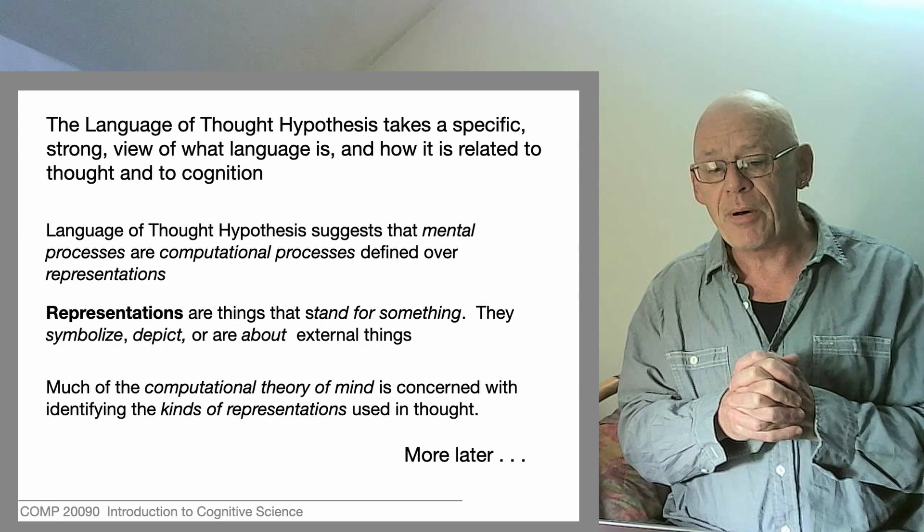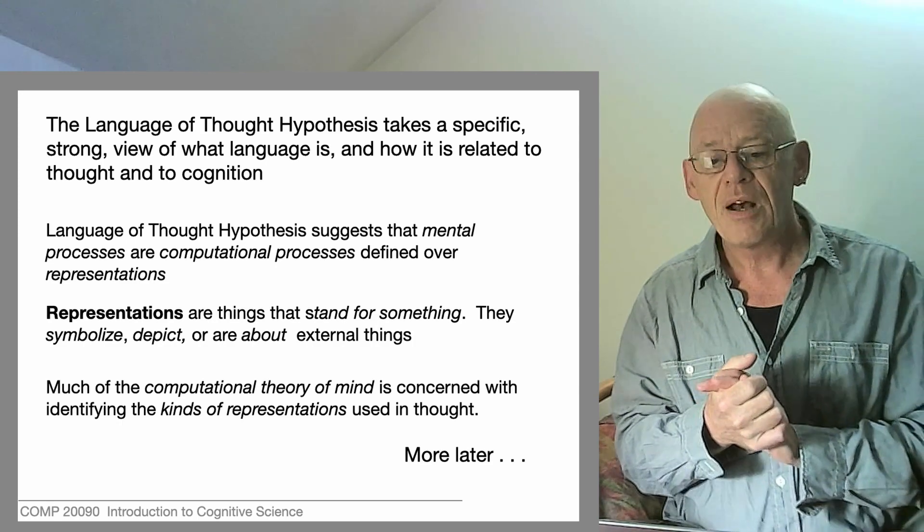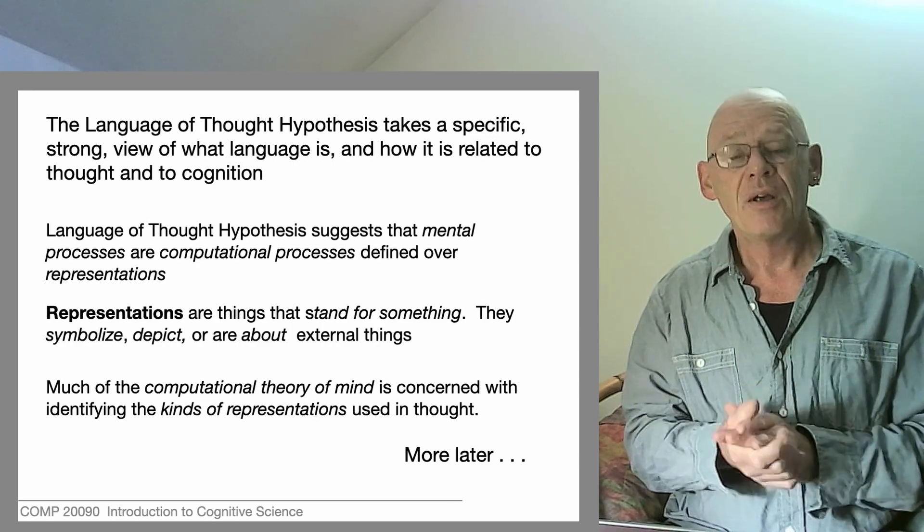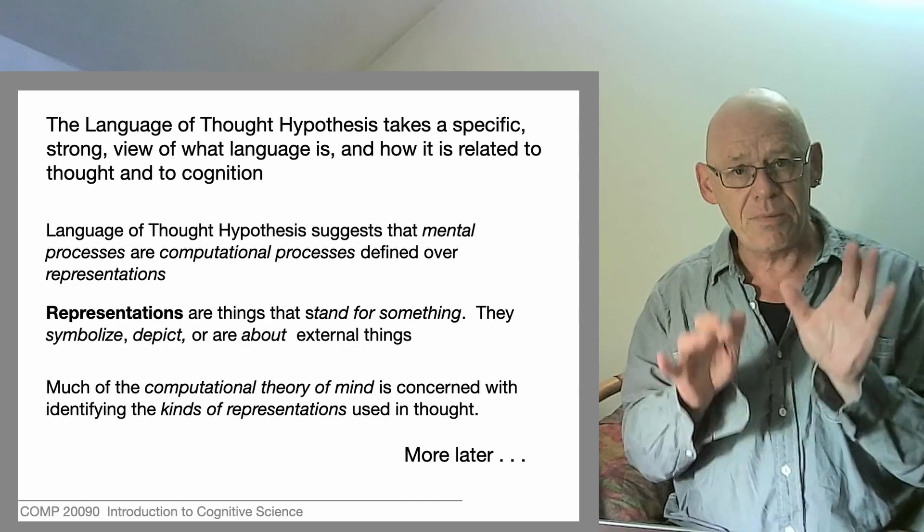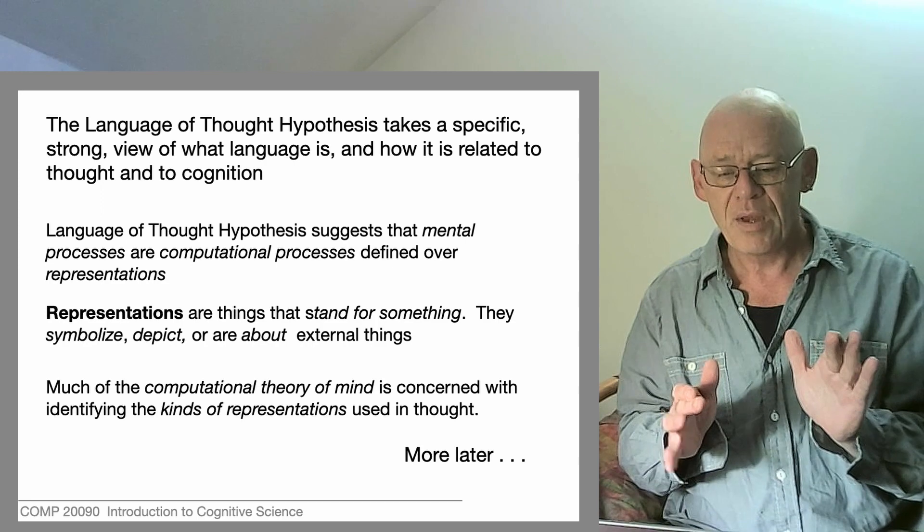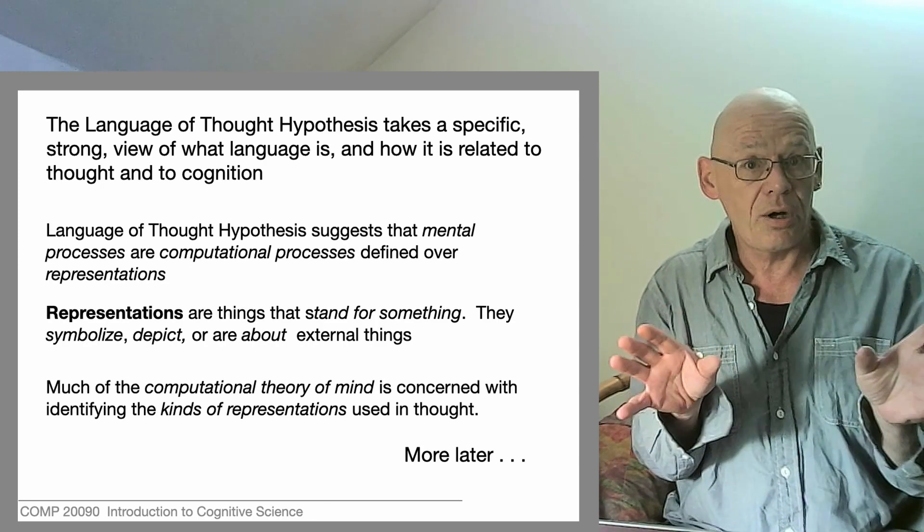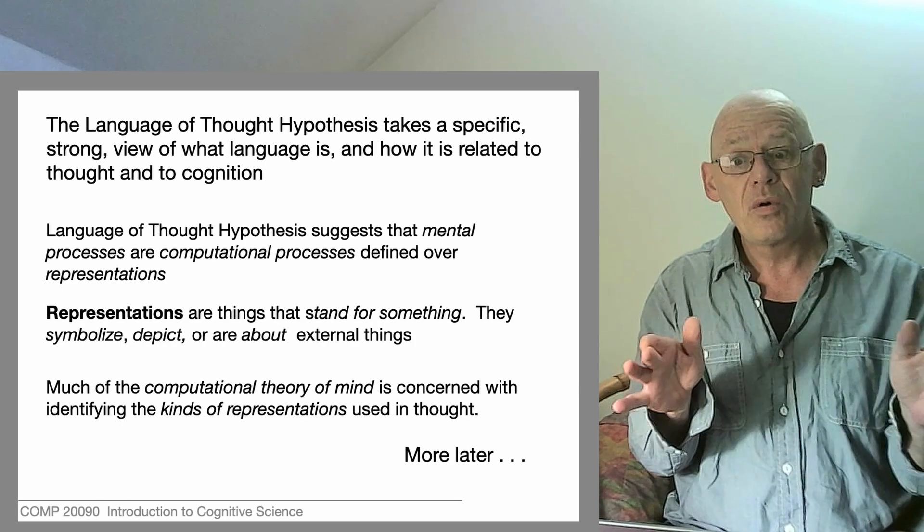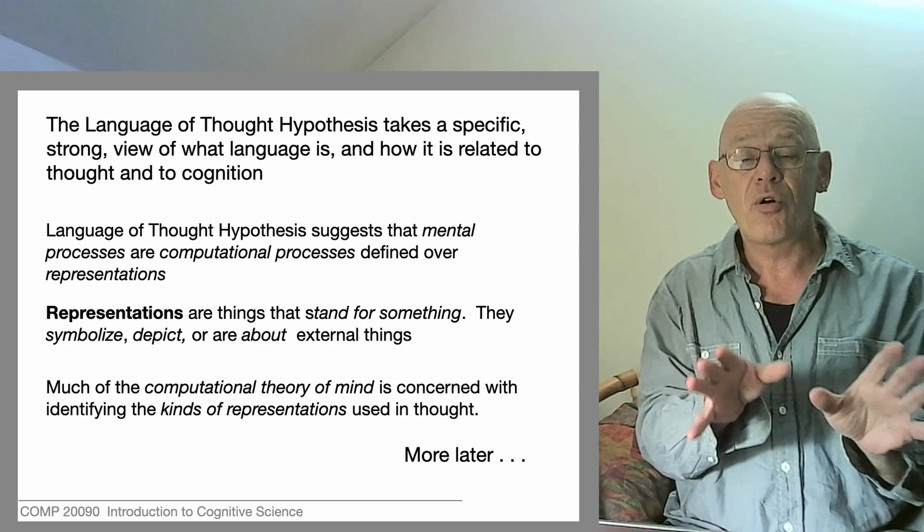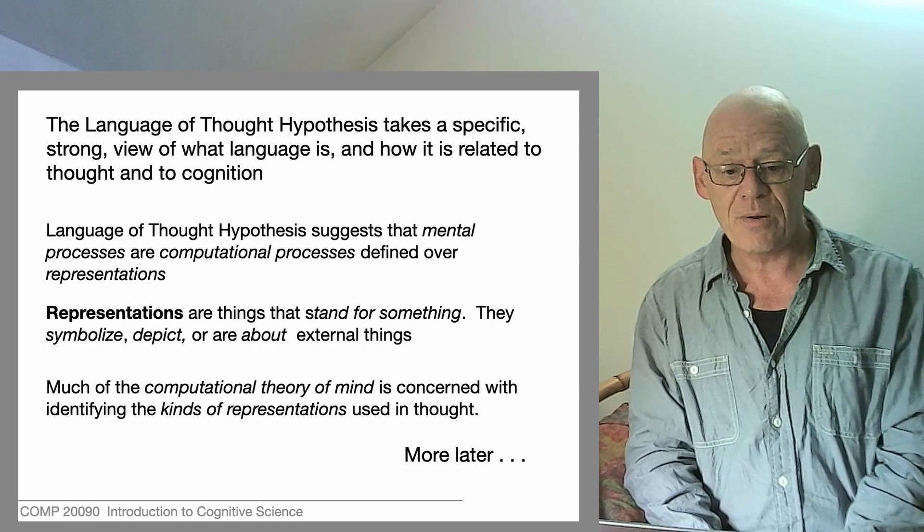The language of thought hypothesis suggests that some forms of thinking, some forms of mental process, are computational processes defined over representations. The representations, in this case, are symbols that stand for something. They're about something, but of course, they need to be interpreted. And their meaning will depend on what other symbols they co-occur with, and what kind of rules we can bring to bear to transform sequences of symbols. That's what computation ultimately comes down to.